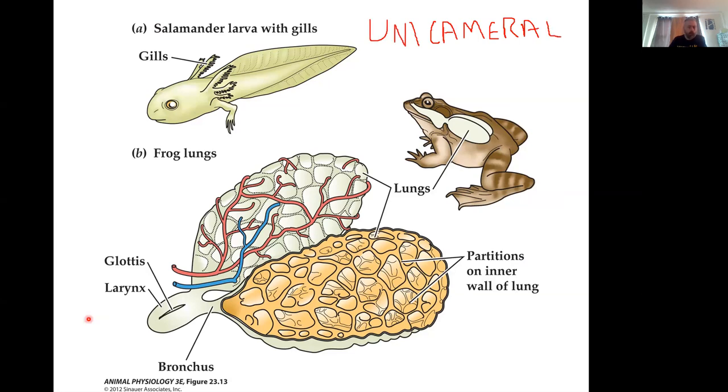They can be subdivided with little trabeculae, little partitions on the inside, but there's still essentially one big chamber. Okay.